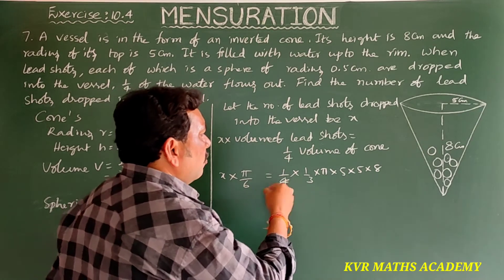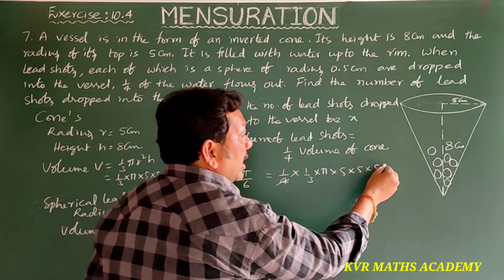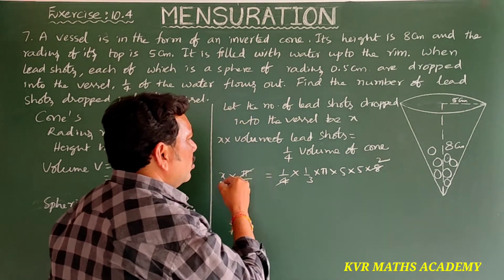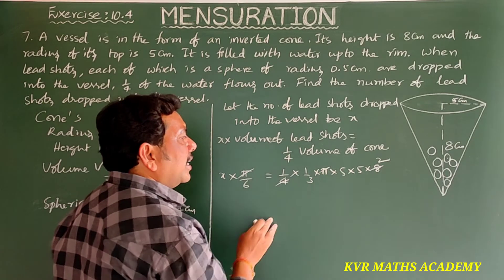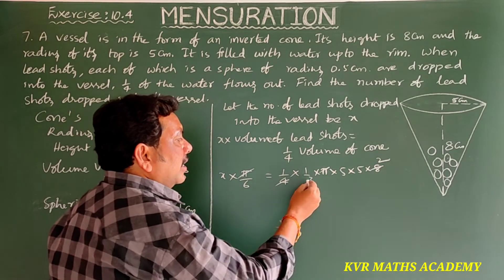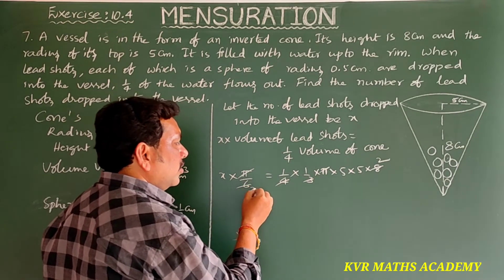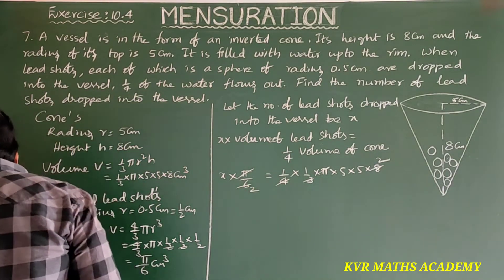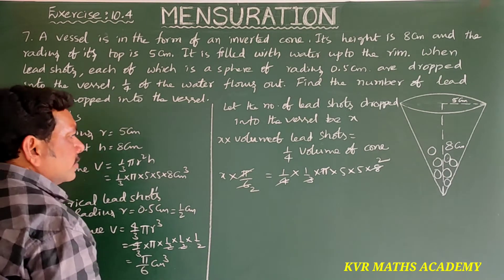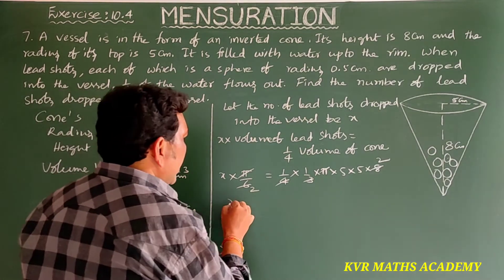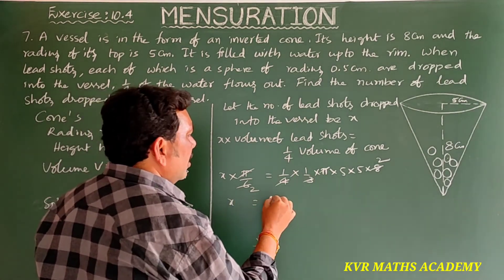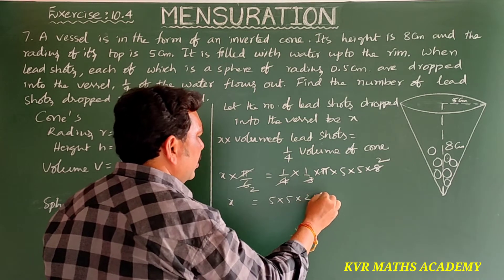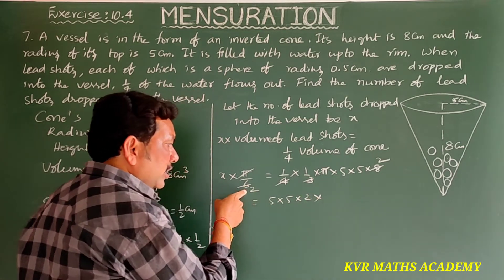Here, 4 and 8 cancel (2 times), π cancels on both sides, and 3 and 6 cancel (2 times). So x is equal to 5 × 5 × 2, giving the number of lead shots as 100.